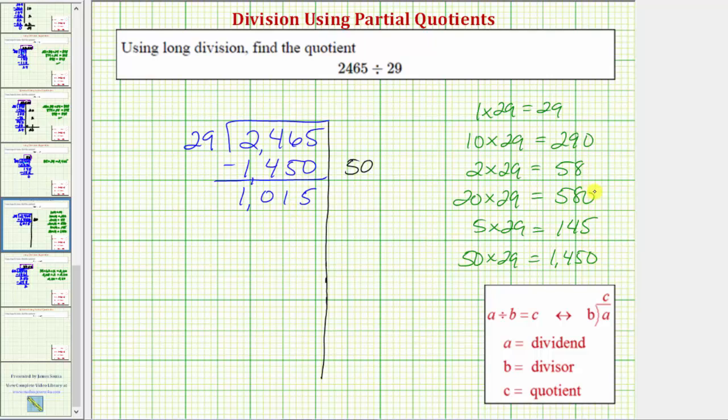So looking at our products, because 580 is less than 1,015, and 580 is equal to 20 times 29, we know there's at least 20 29s in 1,015. So we'll use 20 as the next partial quotient. 20 times 29 equals 580. And we subtract.